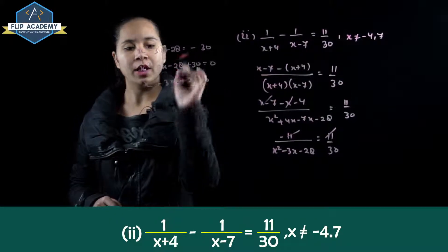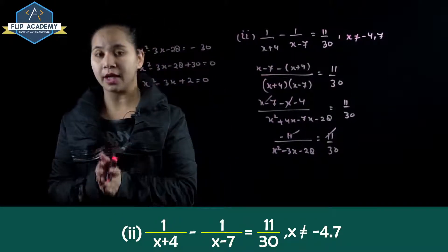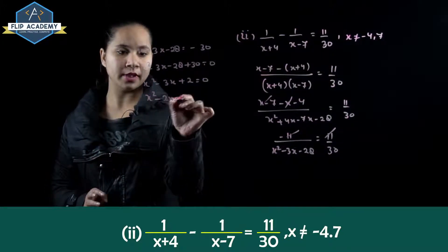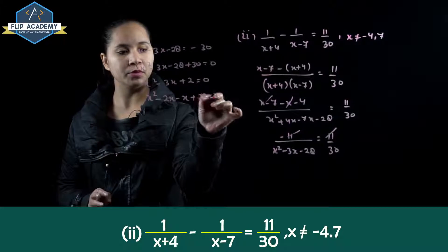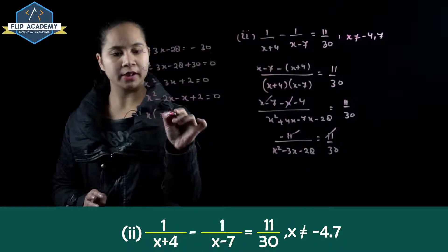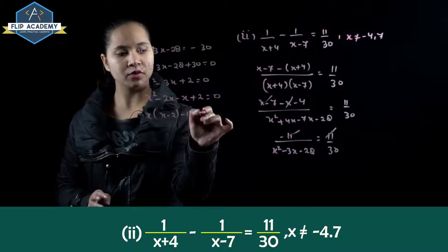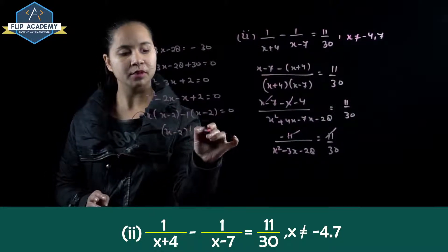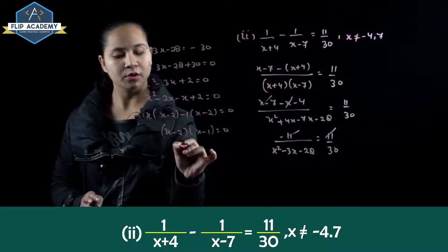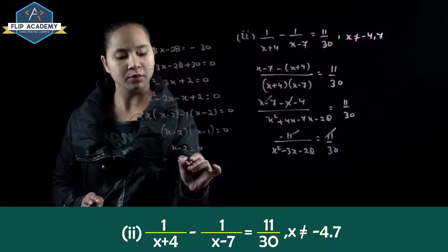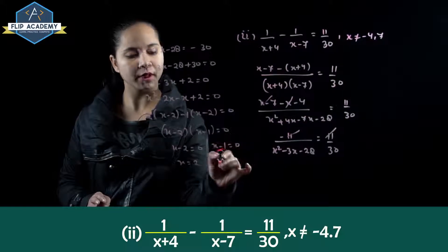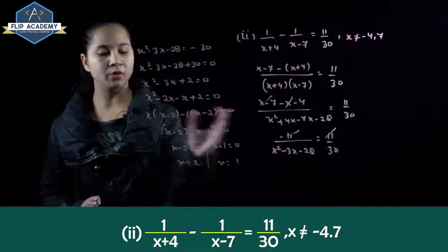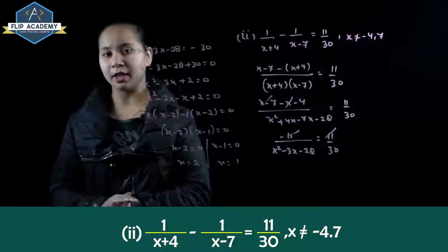So x squared minus 3x minus 28 plus 30 equals 0, which gives x squared minus 3x plus 2 equals 0. Factoring: find two numbers that add to 3 — so x squared minus 2x minus x plus 2 equals 0. Taking x common: x times x minus 2, minus 1 times x minus 2 equals 0. Therefore x minus 2 times x minus 1 equals 0, giving roots x equals 2 and x equals 1. Second part is complete.